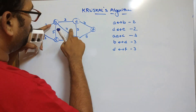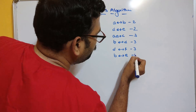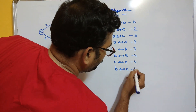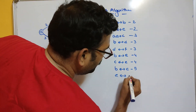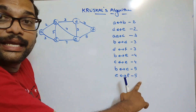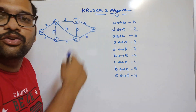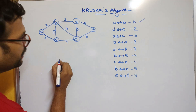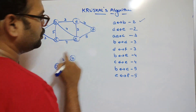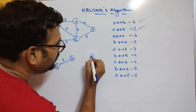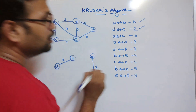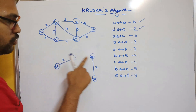Next, cost 4: B–E (cost 4) and C–E (cost 4). Then cost 5: B–C (cost 5) and E–F (cost 5). These edges are now arranged in ascending order from lower to higher cost. Now, considering each edge: first A–B — include it in the tree. Next D–E — include it. Next A–C — there is no C yet, so add it.